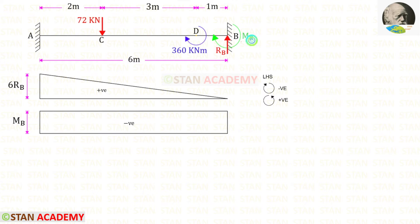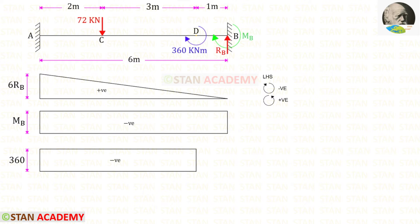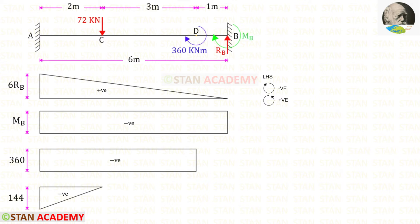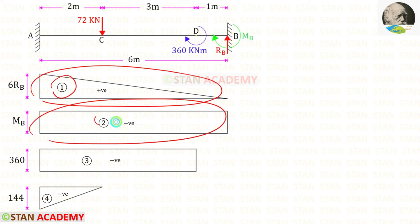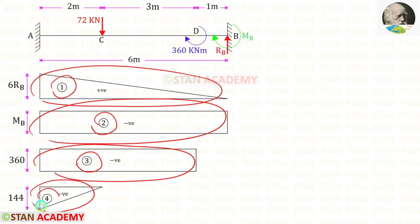Now let us find the moment due to MB. We assume that MB is acting in the clockwise direction, so it will be negative. The diagram will be in the shape of a rectangle. Now for the concentrated moment of 360 kilo Newton meters — it is acting in the clockwise direction, so it is also negative, giving a rectangle. For the moment due to load 72, it is clockwise and therefore negative; the distance is 2, so 72 into 2 gives us 144. Let us label these diagrams as number 1, 2, 3, and 4 respectively.